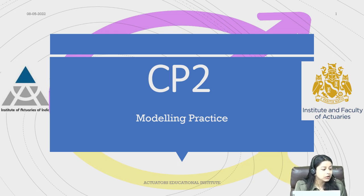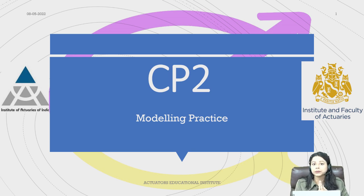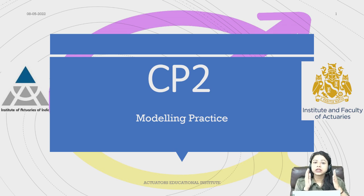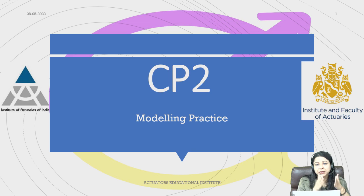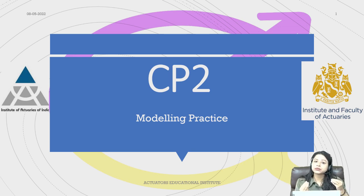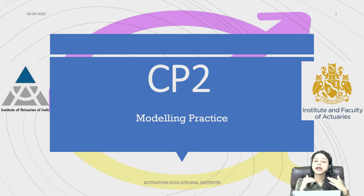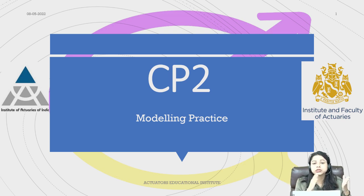There are two papers you will be appearing for in CP2: Paper 1 and Paper 2. Generally both papers are on simultaneous days — Paper 1 first, then Paper 2 on the very next day. The same applies for both IFOA and IEI. Earlier IEI used to take both exams on the very same day, but they have changed their pattern and now take them on two simultaneous days.